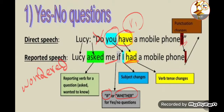There may or may not be a subject change depending on context. After the subject comes the verb change — the backshift of the tense. Reported speech in general depends on the backshift of the tense, meaning we go back in time. Since we have present simple here, it changes to past simple. The question mark is omitted and replaced with a full stop.